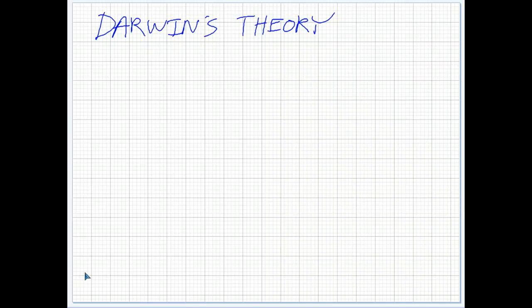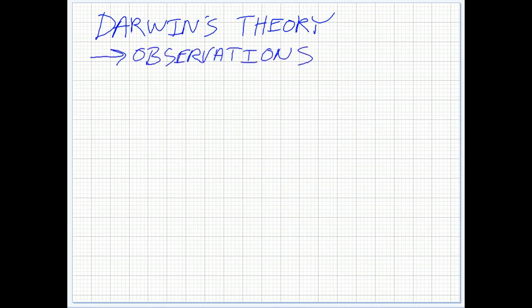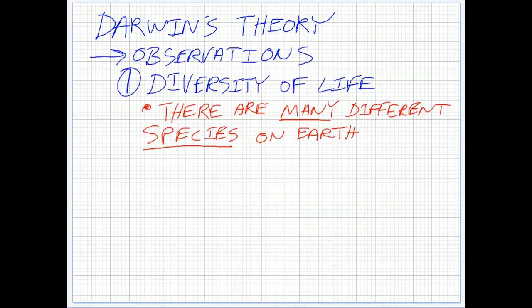We're going to have a quick look at Darwin's theory of evolution and the stuff that he saw that got him thinking while he was in the Galapagos Islands. It's going to move pretty quick because there's a lot to look at. We look at Darwin's theory and the observations he had, and the first one was the diversity of life. Diversity means having many different species — if we talk about the diversity of your backyard you'll have earthworms and squirrels. If we look at diversity all over the world, there are millions and millions of different species.